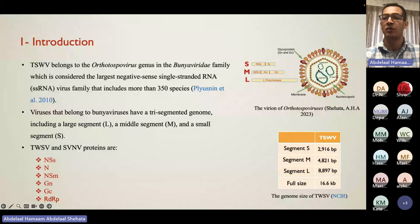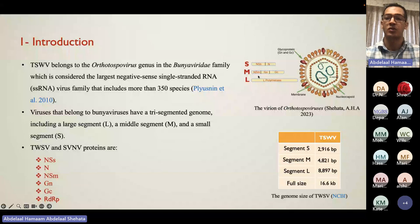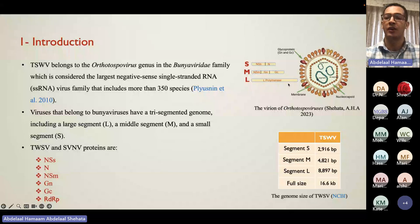The nucleocapsid also wraps the RNA of the virus, forming something called the ribonucleocapsid. The medium segment has three proteins: the first is the non-structural movement protein, which helps the virus move from cell to cell using the plasmodesmata — small tunnels that connect plant cells. The medium segment also encodes the envelope glycoproteins Gn and Gc, which are essential for the virus to bind with insects. The large segment carries the replicase of the virus, helping it replicate in its host.